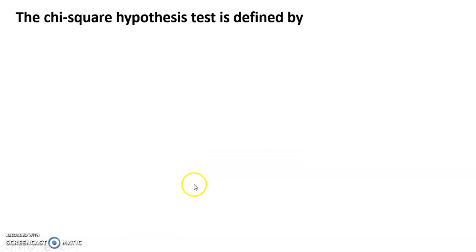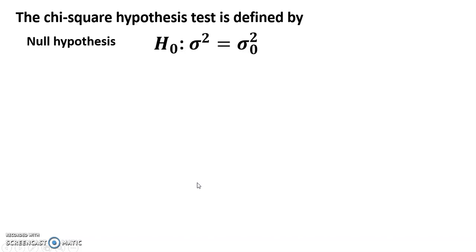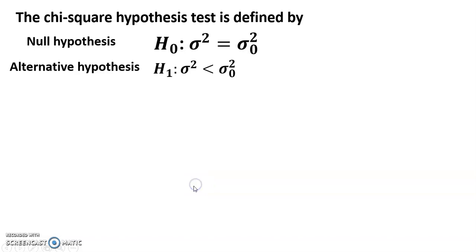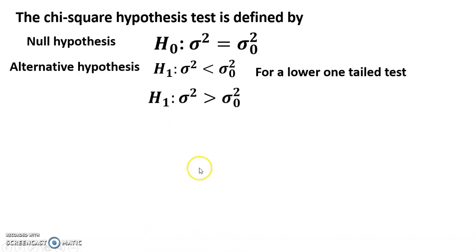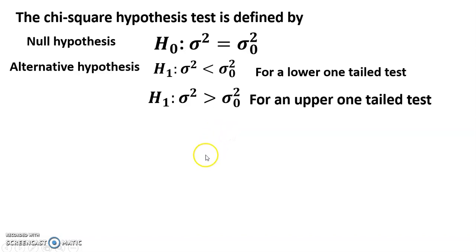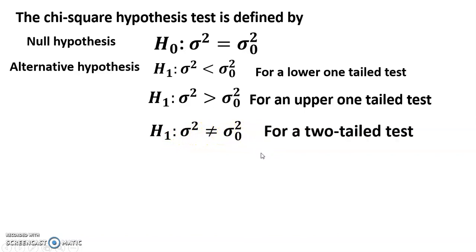Hello dear friends, welcome to my channel. Today's discussion is the chi-square hypothesis test, defined by null hypothesis H0 such that sigma square equals sigma zero square. The alternative hypothesis H1 is: sigma square less than sigma zero square for a lower one-tail test, or H1 sigma square greater than sigma zero square for an upper one-tail test, or H1 such that sigma square does not equal sigma zero square for a two-tail test.